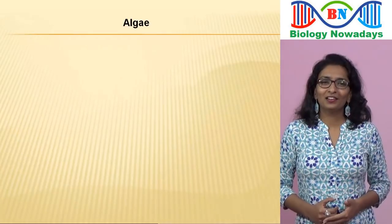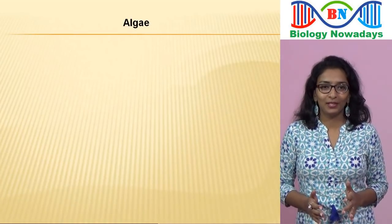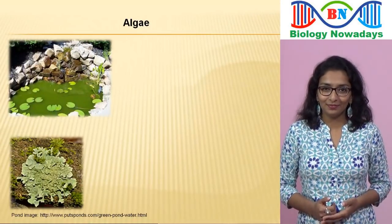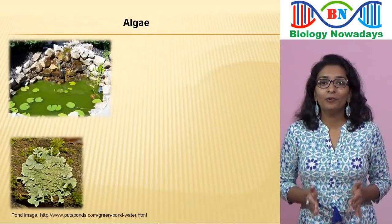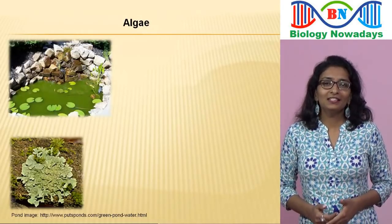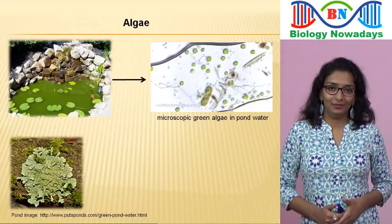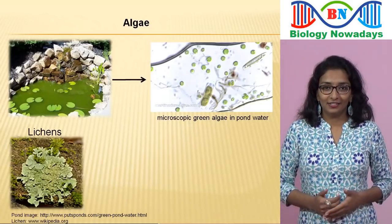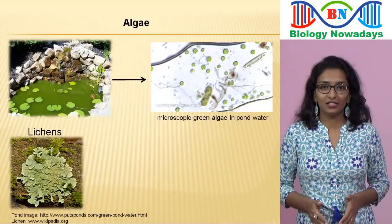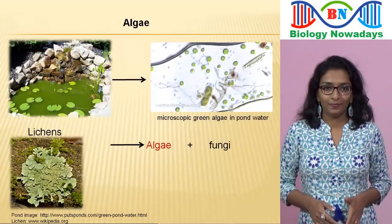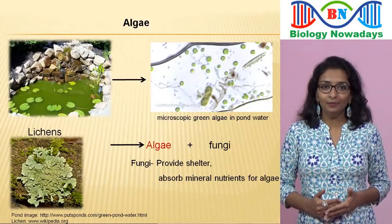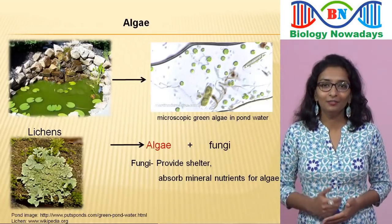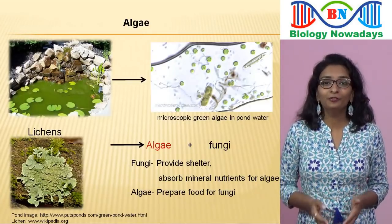Have you seen algae somewhere around you? Have you seen a green pond, or this kind of structure on trees? If you observe a drop of pond water under a microscope, you will see a variety of microscopic green algae. Now, those structures on the trees are called lichens. Lichen is a symbiotic association between algae and fungi — fungi provide shelter and absorb mineral nutrients for the algae, while in turn the algae provide food for the fungi.